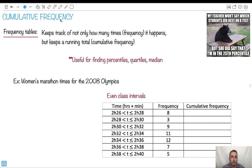I'll be talking to you about cumulative frequency, and especially these graphs. Like this one: my teacher won't say which students did best on a test, but she did say I'm in the 25th percentile. That's really bad. All right, so let's look at these frequency tables here. They keep track of not only how many times something happens, but also keep track of the total cumulative frequency. Cumulative means you keep track of the total frequency. Let me show you what I mean here.